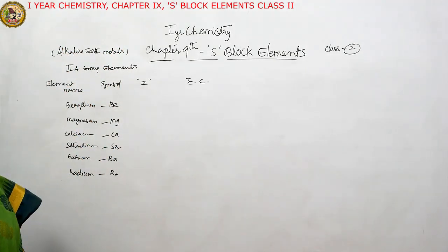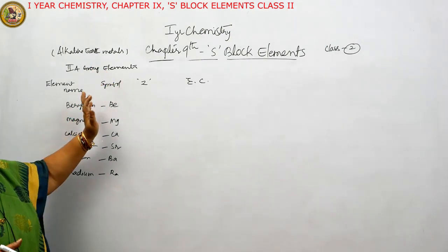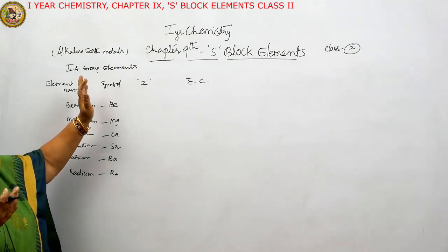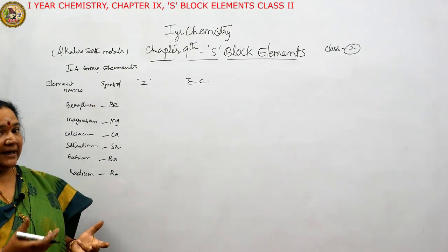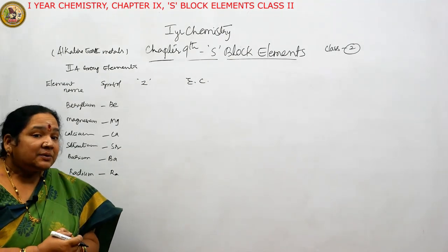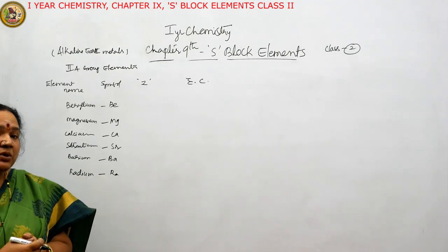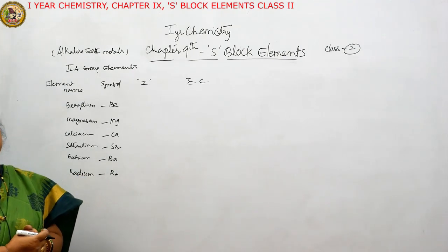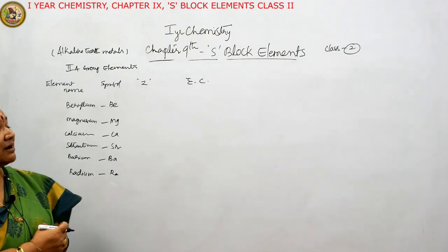The another name given to second group elements is alkaline earth metals. Why? Because these metal oxides, when dissolved in water, they release hydroxyl ions in the solution — that means they are alkaline in nature. This can be decided by putting litmus paper in the solution of their oxides, which turns red litmus paper to blue. These are called alkaline earth metals.